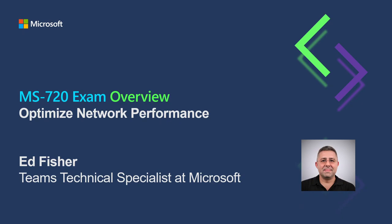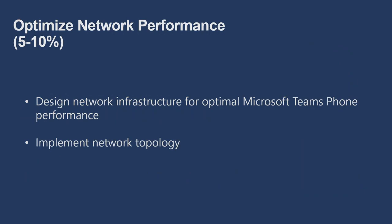Welcome. In this next section we're going to look at optimizing network performance. Optimizing network performance makes up somewhere between 5 and 10 percent of the exam, but there are still several topics and subtopics to be familiar with. The two main ones are designing the network infrastructure for optimizing Microsoft Teams phone performance, and implementing the actual network topology. There are tools, processes, best practices, and minimums you'll want to be familiar with related to both of these topics.